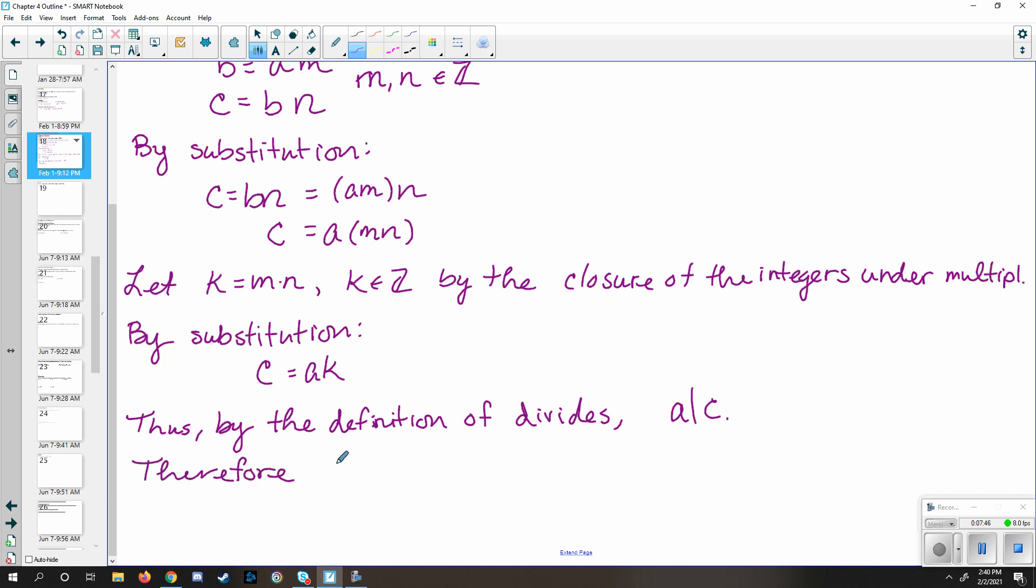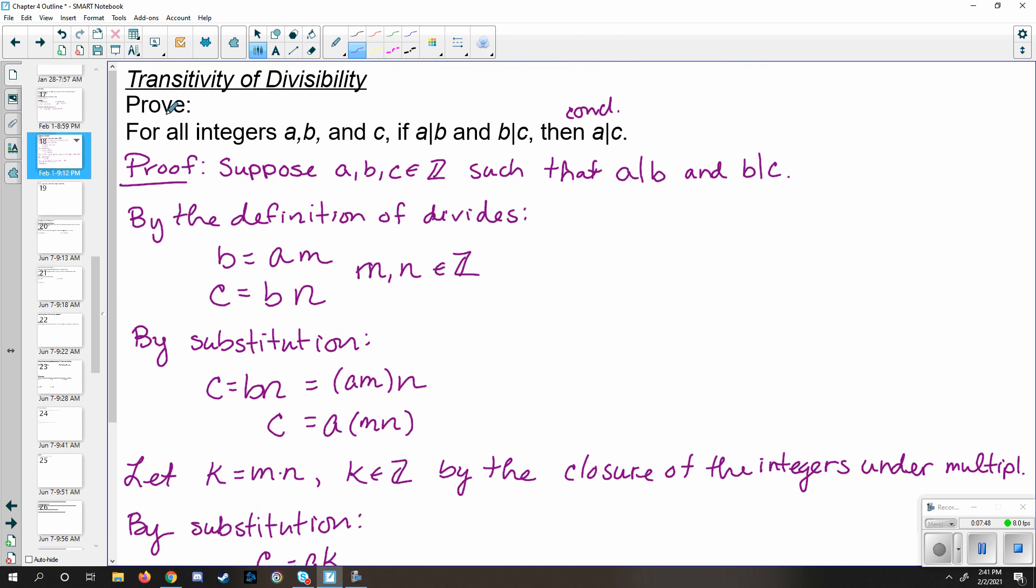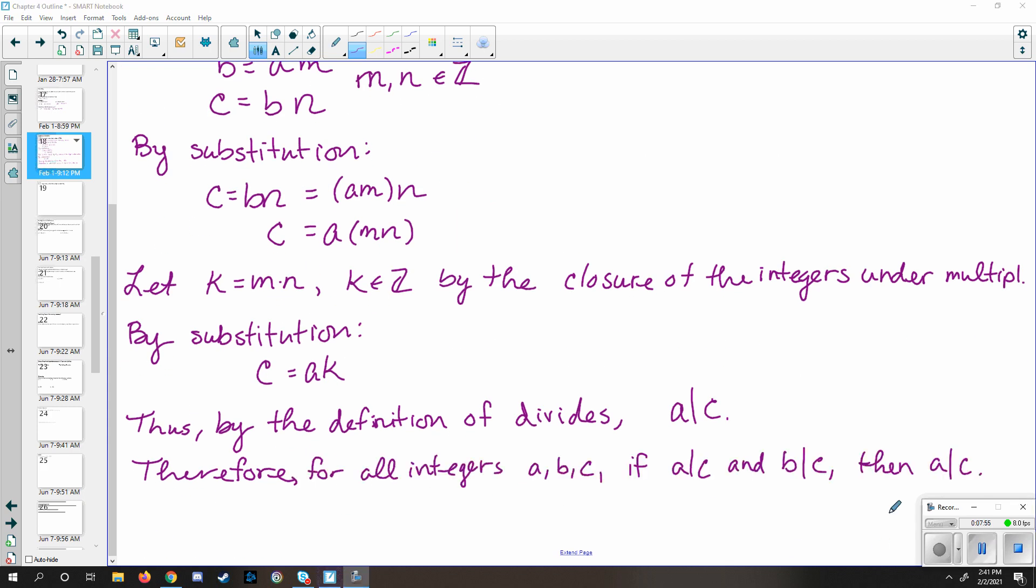So by the definition of divides, a divides c. Therefore, just restate the original statement. For all integers a, b, and c, if a divides b, and b divides c, then a divides c. Once you've made your final statement, just be sure to wrap up your proof. You can either use the closed in box or write QED at the end.